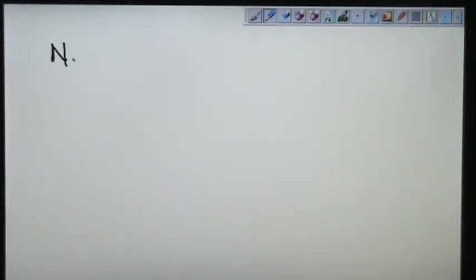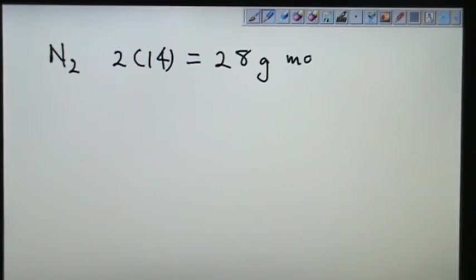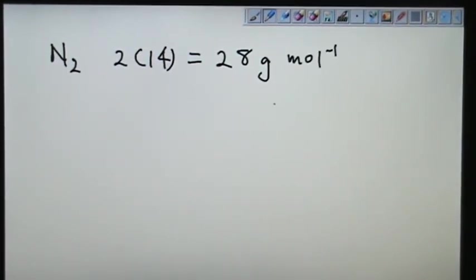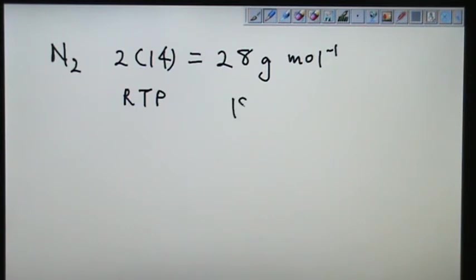Nitrogen gas. So I know it has 2 times 14, and this is 28 gram per mole. This is the molar mass. And then it also mentioned that it is at room temperature and pressure. And the volume is 1008, 1008 cm3 is what I call 1.8 dm3.